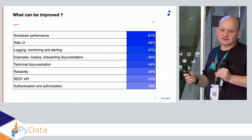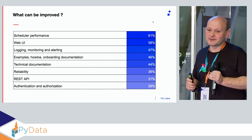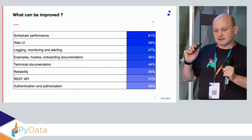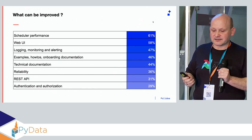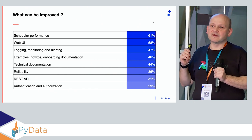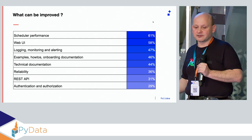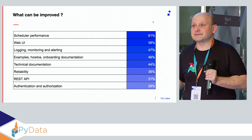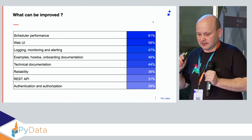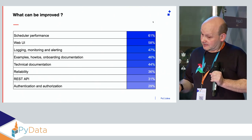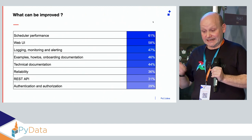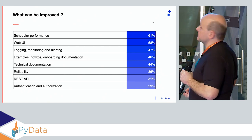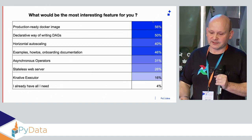What can be improved? Performance, scheduler performance, web UI — people would like it to be nicer. Logging and alerting. Surprisingly, we learned how many people want better documentation, better onboarding, better technical documentation, better examples, how-tos. Better reliability. REST API — 30% of people want that. And authentication/authorization. These are the top things people want improved.